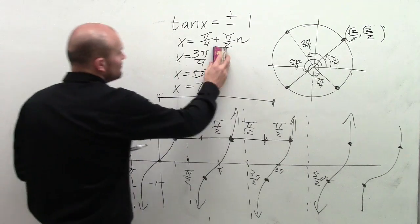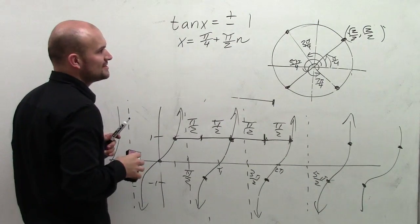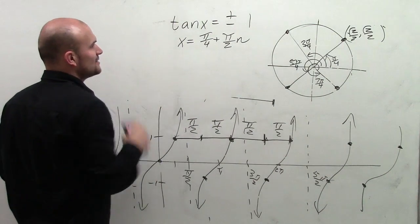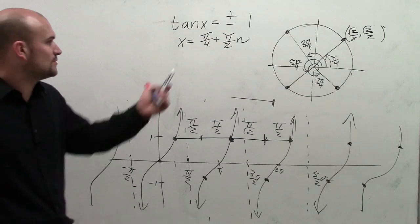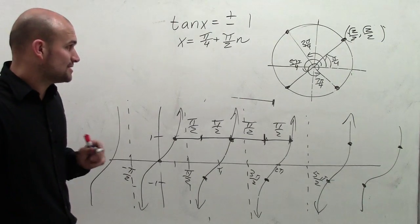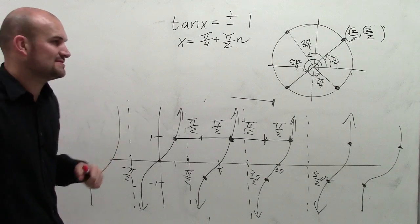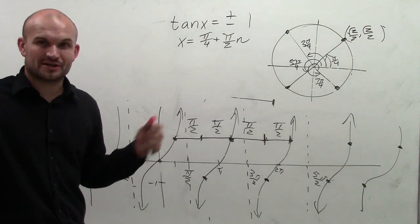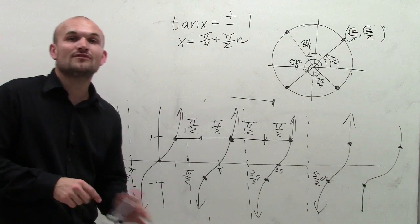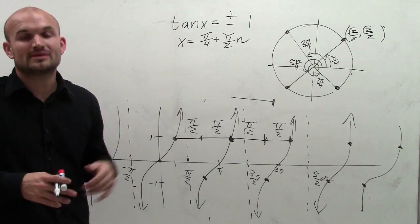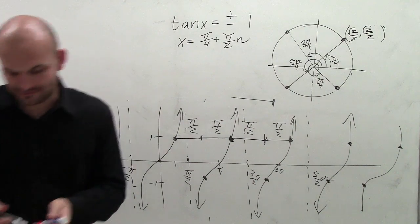So rather than writing all separate solutions and adding 2 pi, I can just write x equals pi over 4 plus pi halves times n. That covers all solutions for tangent of x equals plus or minus 1. That's how you solve for all the solutions. Thanks.